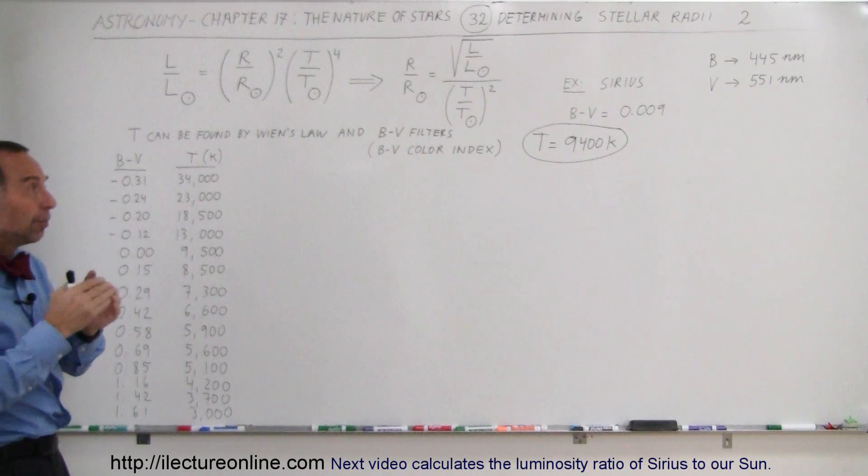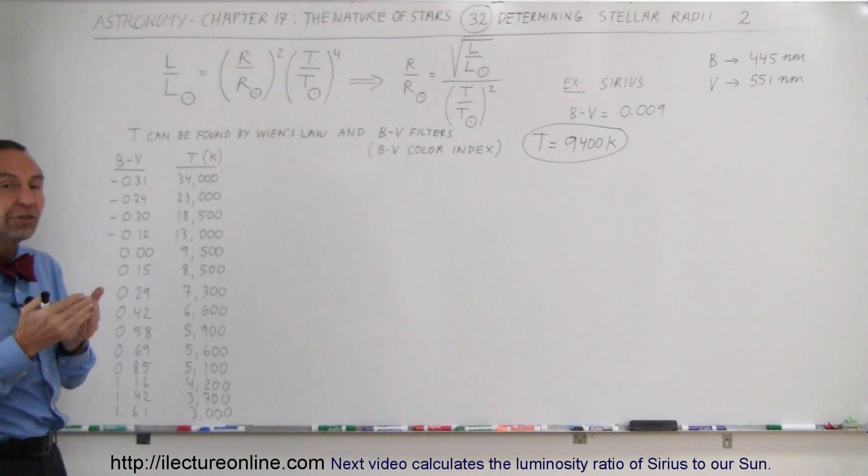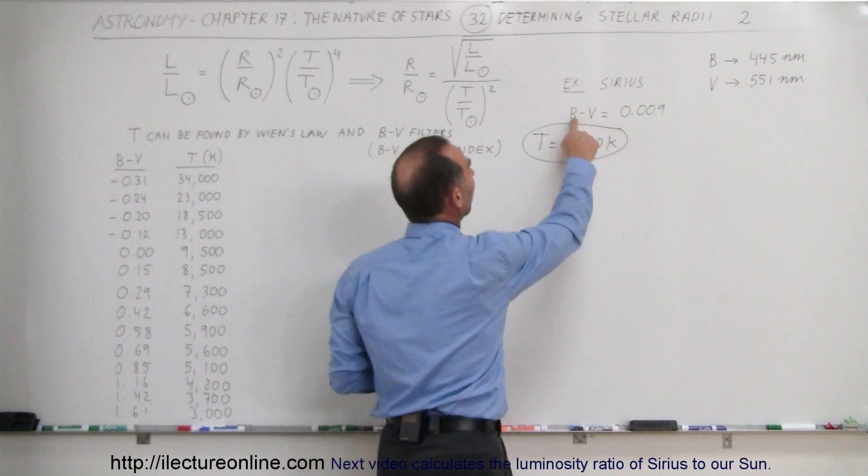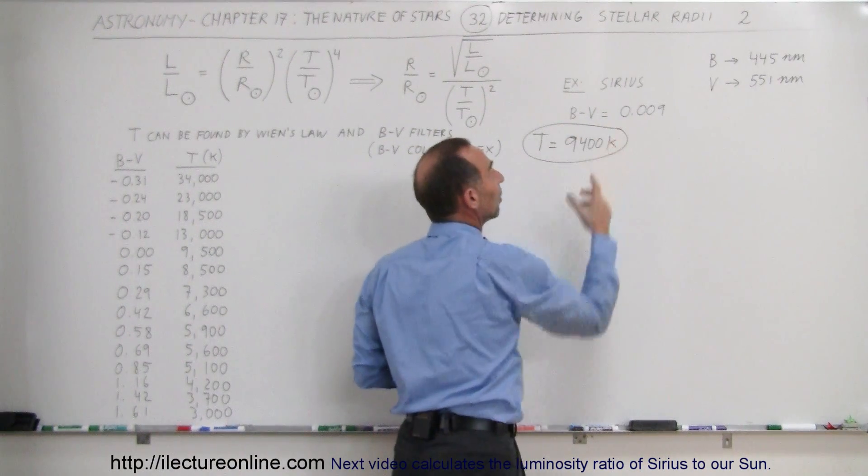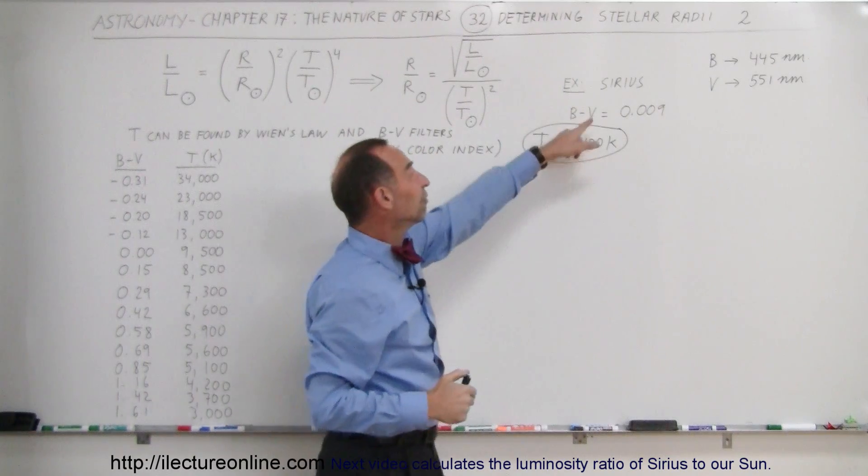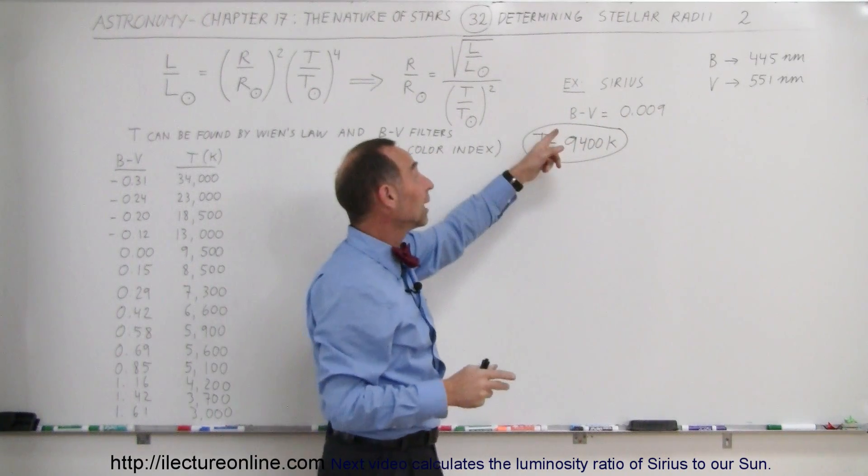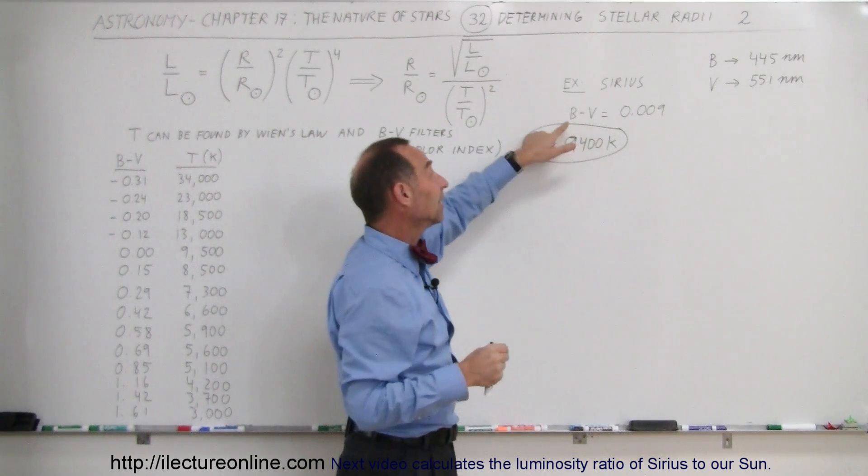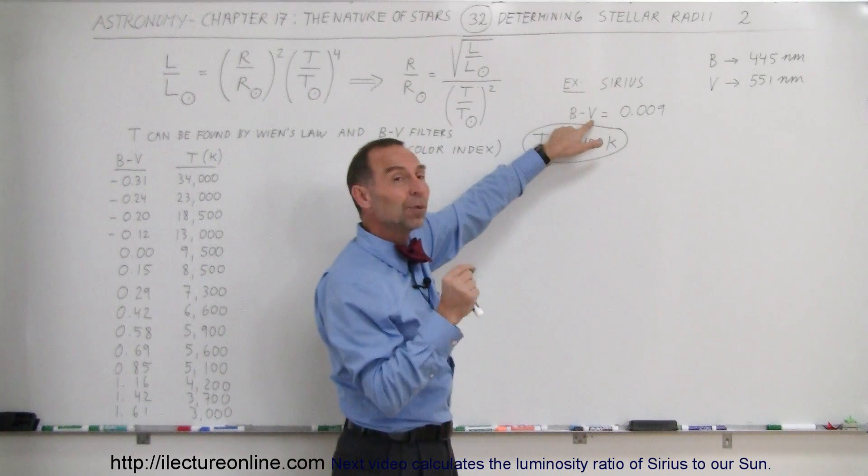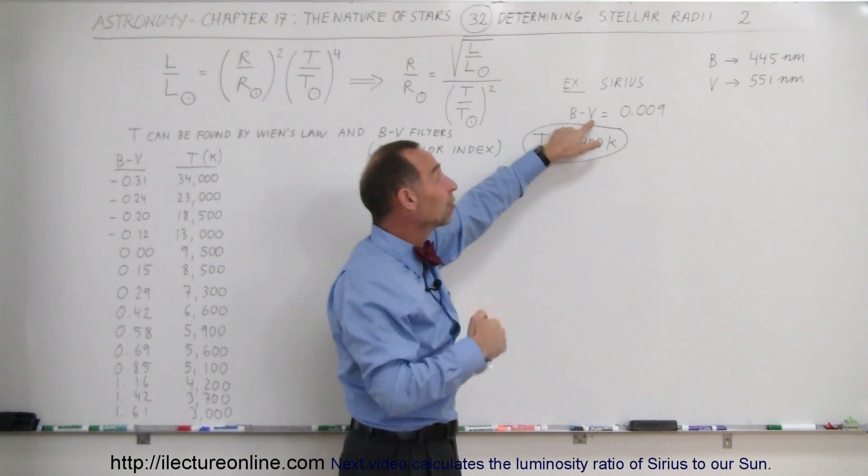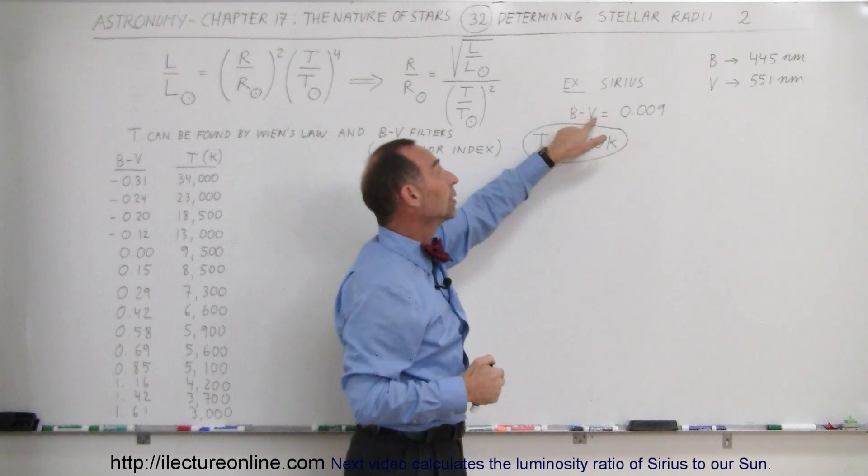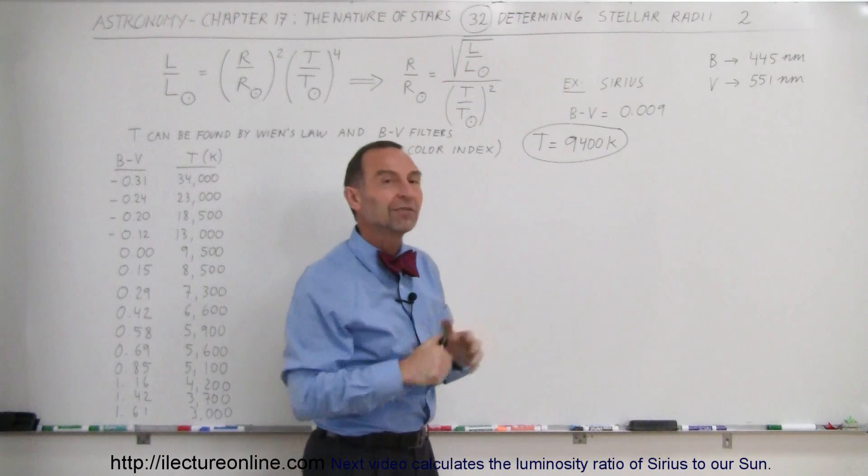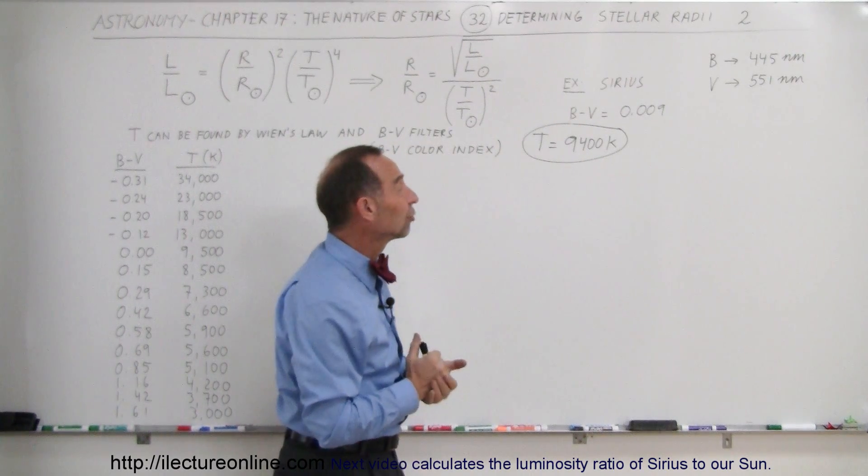Again, notice that the more visible it is through a filter, the smaller the magnitude number. A small number minus a big number would give us a negative number, which means it's not very visible in the visible light but very visible in the blue light, so a very hot star. But if it's very visible in the visible light and not very visible in the blue light, then we get a very small number here because magnitude smaller is bigger. A big number minus a small number gives us a big number, that means it's not very hot, it's a relatively cool star. And that's how the B minus V calculation works.